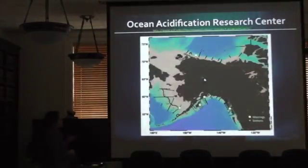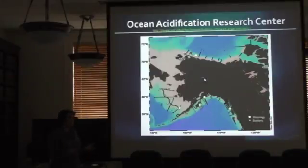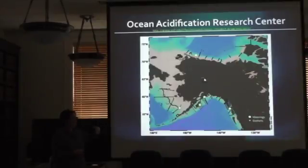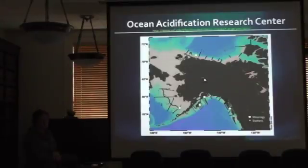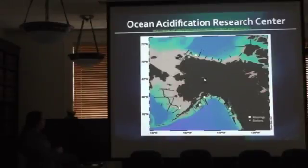Our main mission is to understand the intensity — the number value — the duration, whether we're seeing those numbers all year or part of the year, and then the extent, asking where around Alaska we're seeing that. We do shipboard surveys on research vessels, doing CTD profiles and looking at water column chemistry. All these black dots are stations we've been to around Alaska — approaching 1,500 stations in about eight years. We also have yellow dots which are our moorings.